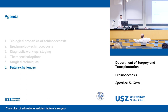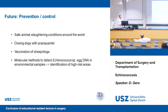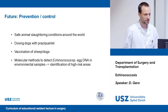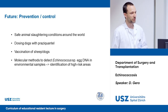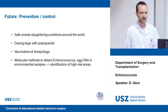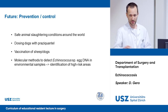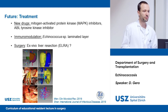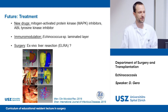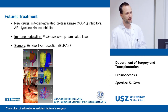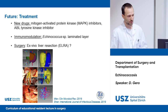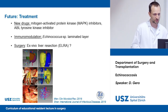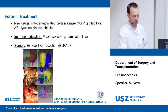I'd like to talk about future challenges in echinococcosis. Prevention is very important: we need safe animal slaughtering conditions worldwide, dosing dogs with praziquantel, and vaccination of sheep and dogs. New molecular methods to detect echinococcus species in environmental samples can help identify high-risk areas. On the treatment side, efforts are underway to develop new drugs — mitogen-activated protein kinase inhibitors and tyrosine kinase inhibitors — as well as new immunomodulatory drugs targeting the laminated layer of echinococcus. A recent paper from China reported ex vivo liver resection and autotransplantation.